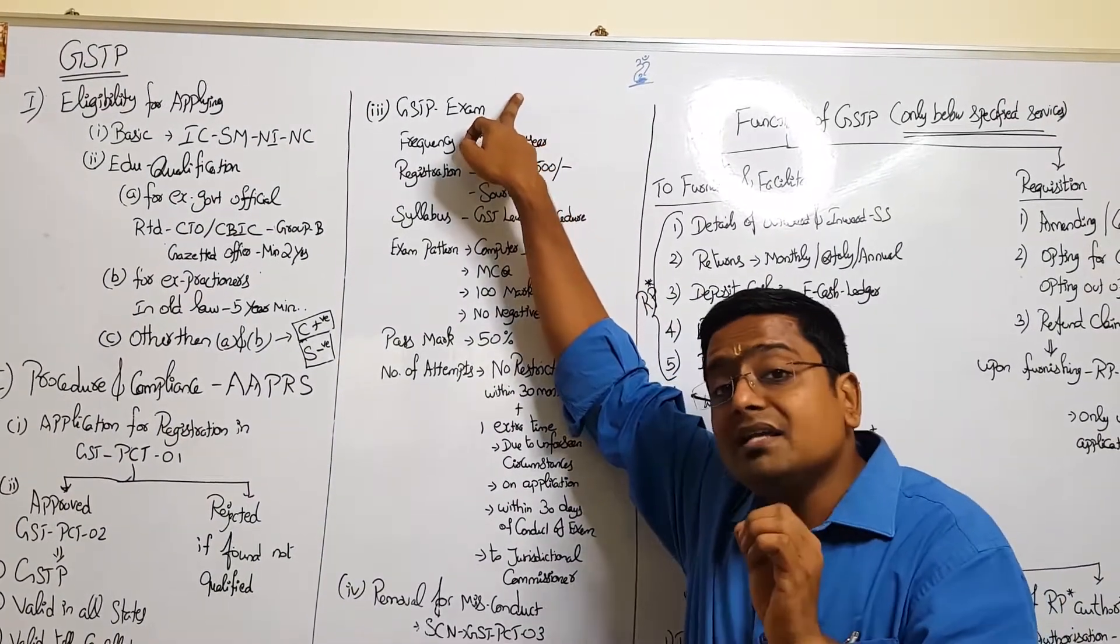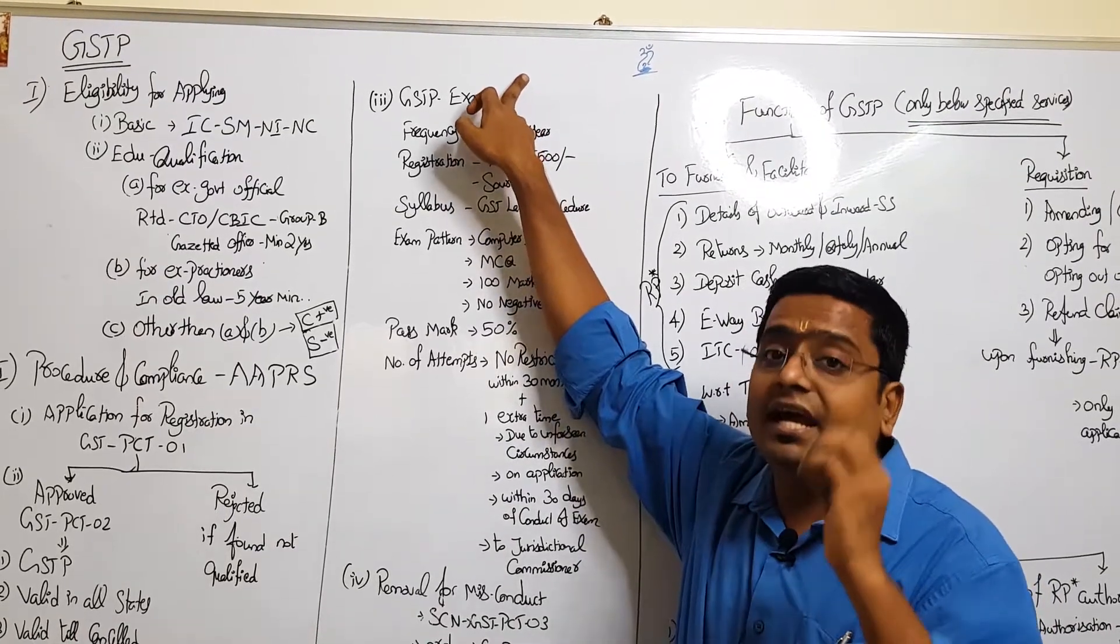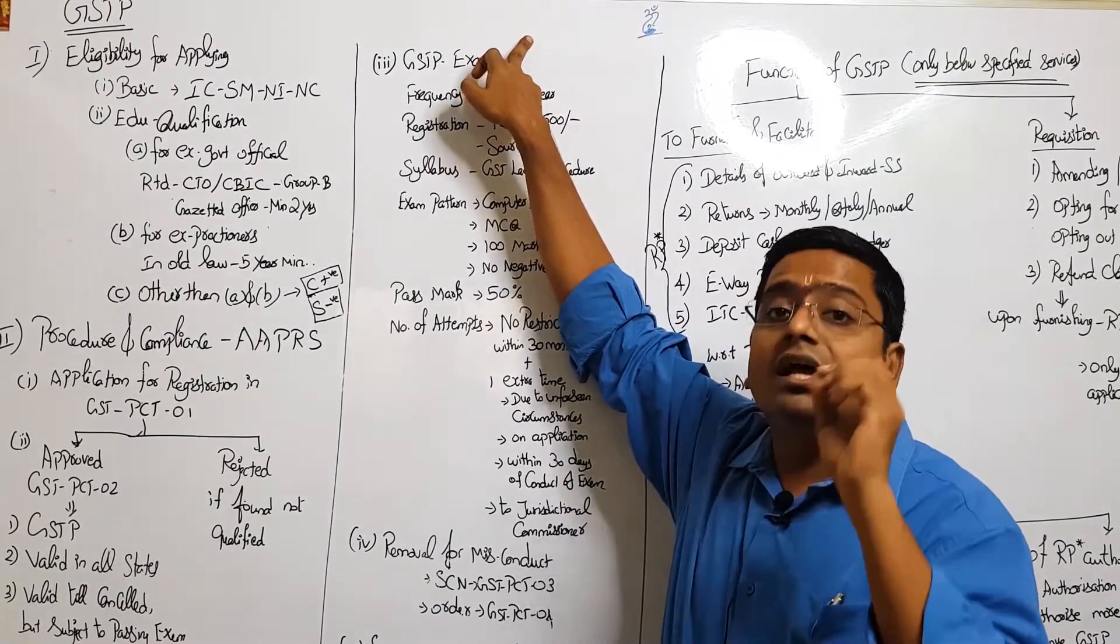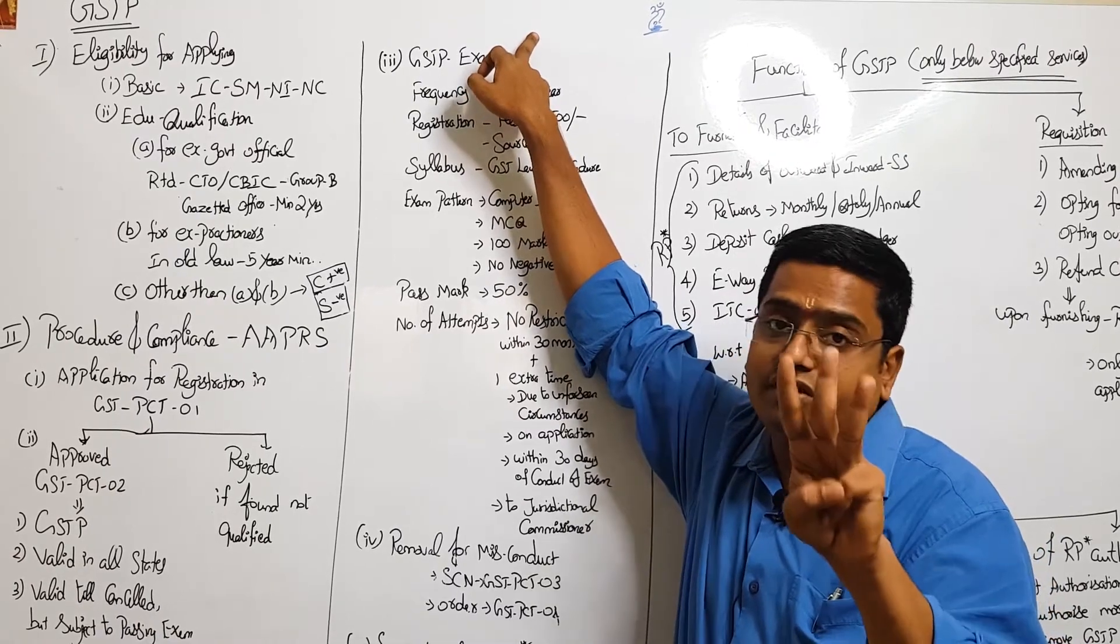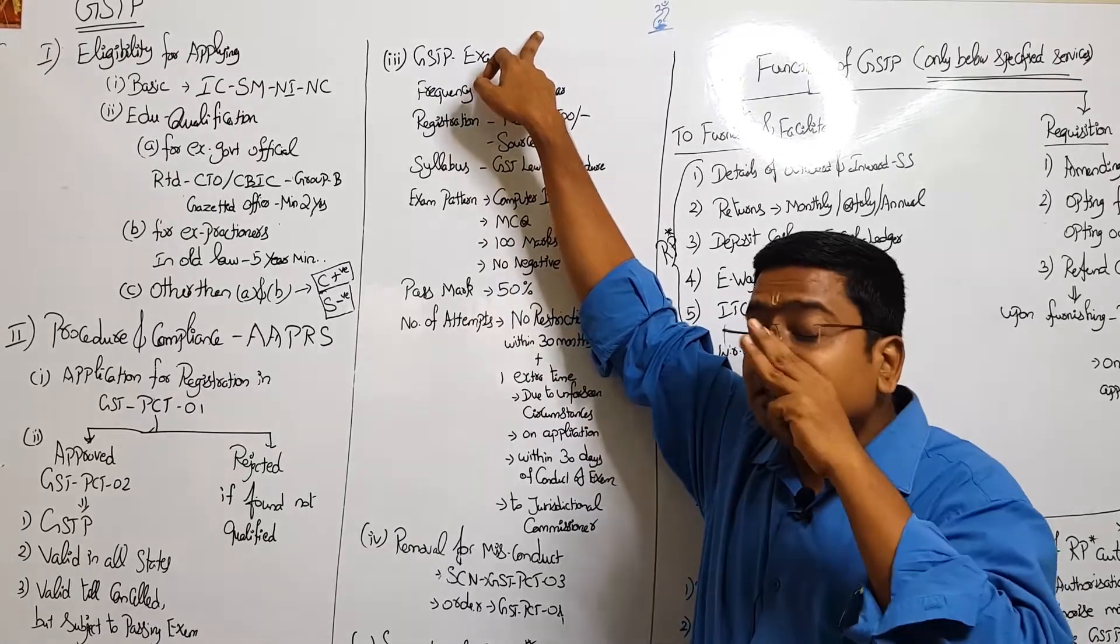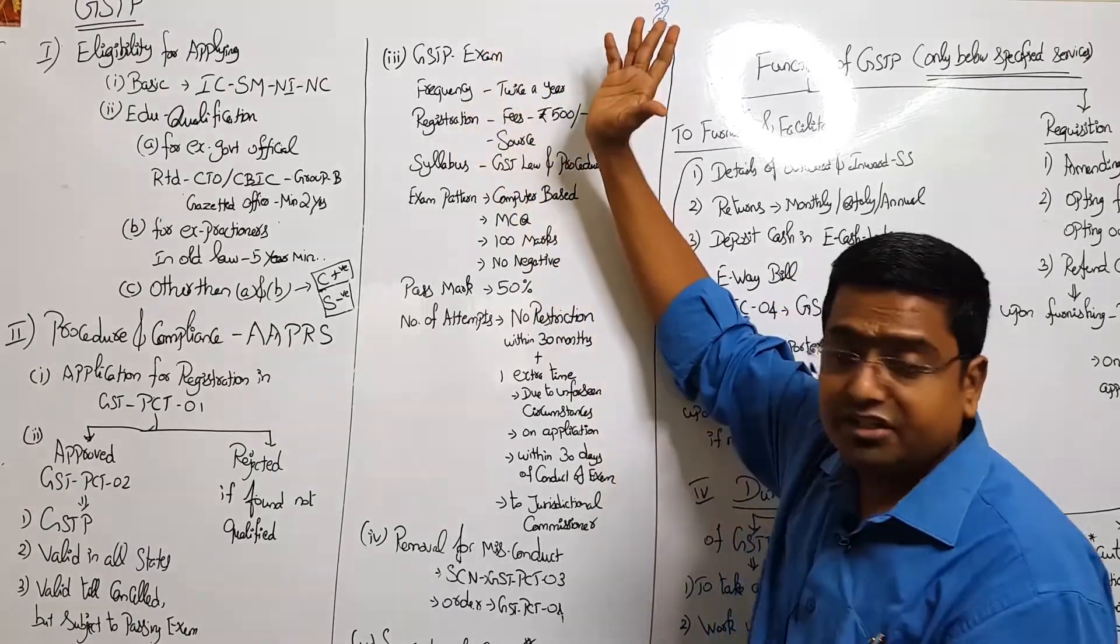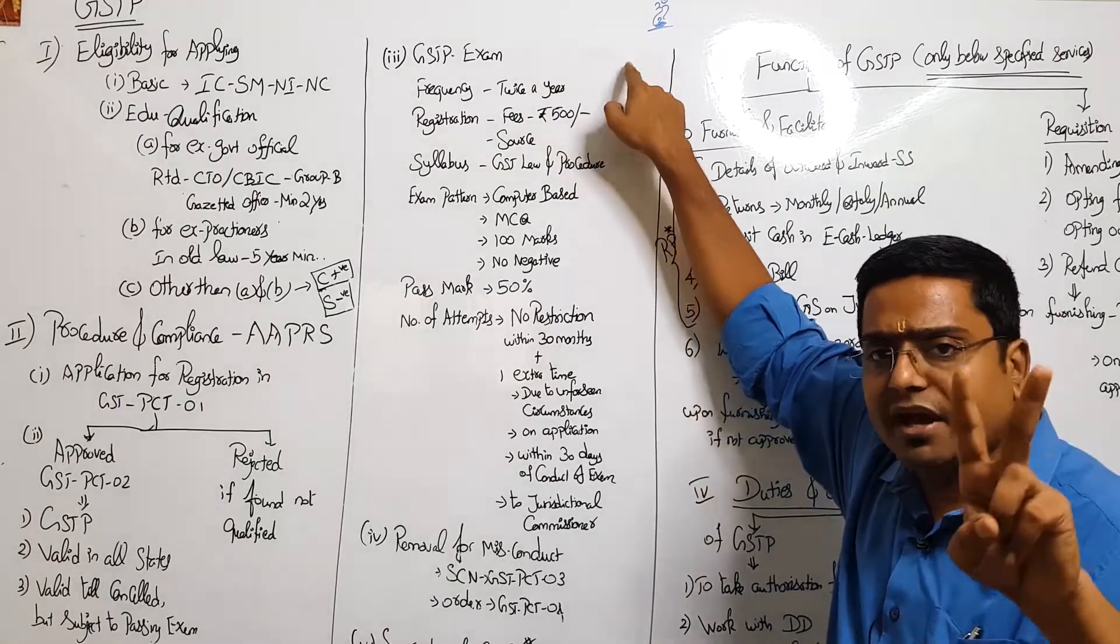What is this NASCENT examination? Every person who has made an application and approved as GSTP has to pass an examination conducted by NASCENT - N-A-C-I-N - National Academy for Customs, Indirect Taxation and Narcotics. They are the only authorized person to conduct this examination within 30 months from the date of approval. They have to pass this examination.